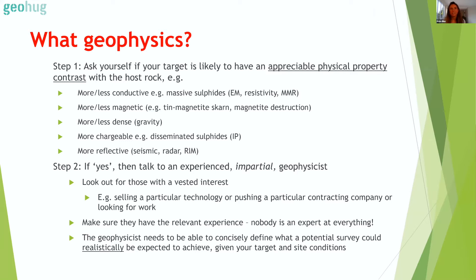The really experienced exploration managers — the ones with 15 years plus experience — all have an almost formulaic approach. The first thing they ask is: does my target likely have an appreciable physical property contrast? If it's likely to be more or less conductive, consider EM. If it's more or less magnetic, look for magnetite destruction or alteration with a mag survey. If it's more chargeable — stores electricity better than surrounding rock — that's where you might use IP.